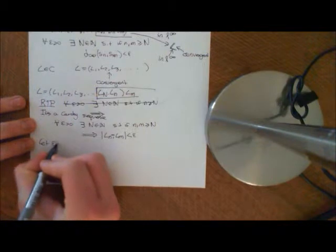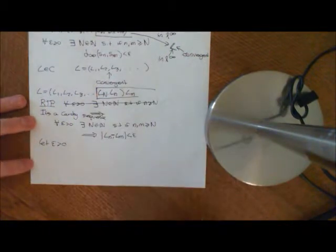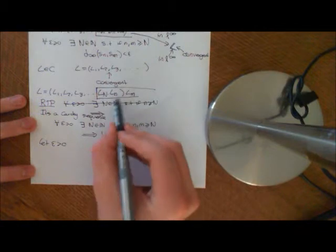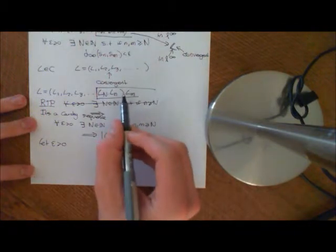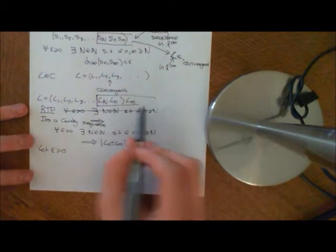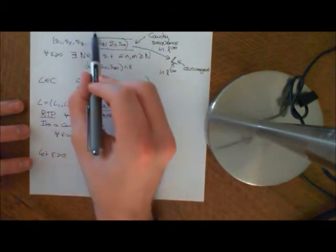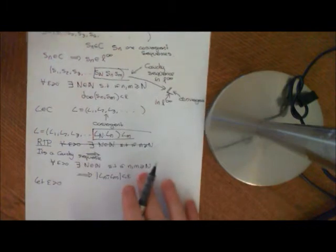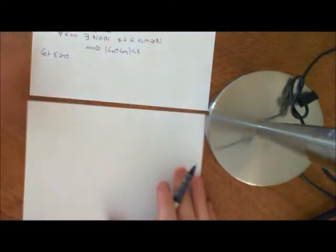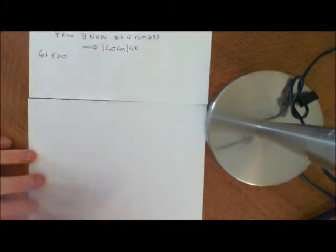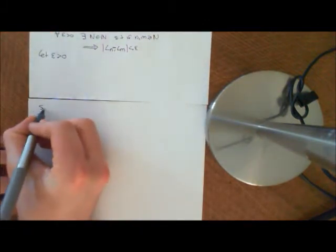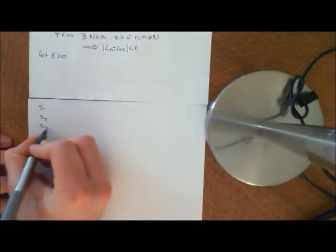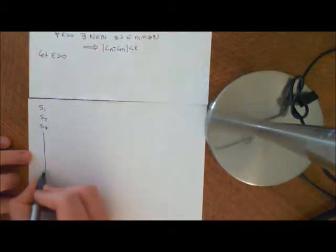Let epsilon be an arbitrary number greater than zero. We now need to show that L is necessarily Cauchy because it's the limit of a collection of convergent subsequences of real or complex numbers. Let me go on to a new sheet of paper. Remember where we got this sequence L from — we had sequences s1, s2, s3, converging down to L in L-infinity.